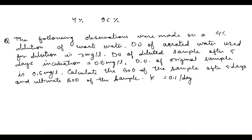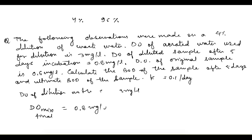The DO of aerated water used for dilution is 3 mg per liter. The DO of the diluted sample after 5 days of incubation is 0.8 mg per liter — that is the final DO of the mix. The DO of the original sample is 0.6 mg per liter, which is the initial DO of the waste. We have to calculate BOD5 and ultimate BOD. KD is given as 0.1 per day, which tells us it is to the base of 10, not base E.